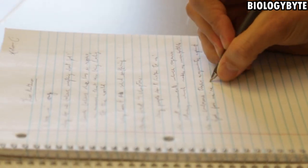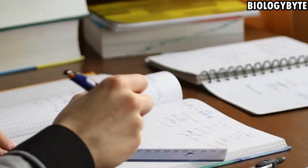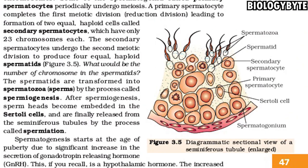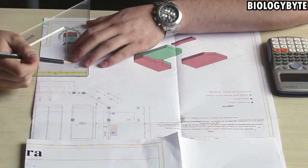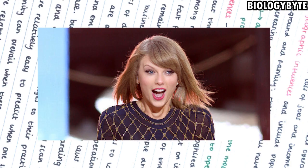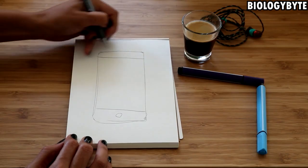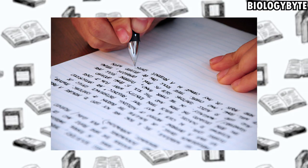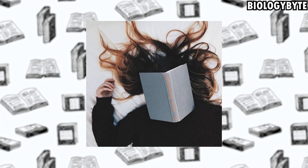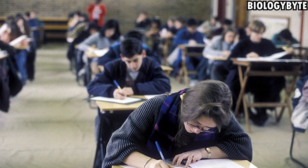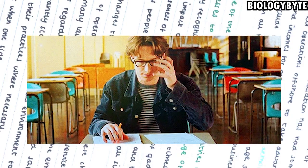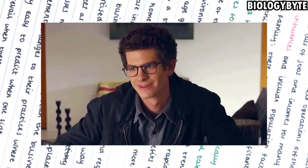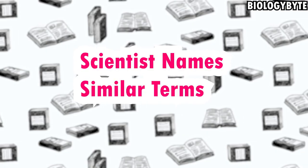The second thing to write in the notebook is the difference between confusing terms in biology — like Chromatid vs Chromatin, Permeation, Spermatogenesis, and similar terms. Write a one-line difference for each. You will remember their definitions, and at the end there will be no confusion about which term is which. In the exam, when you have to write a long answer, you will know exactly which one was which.